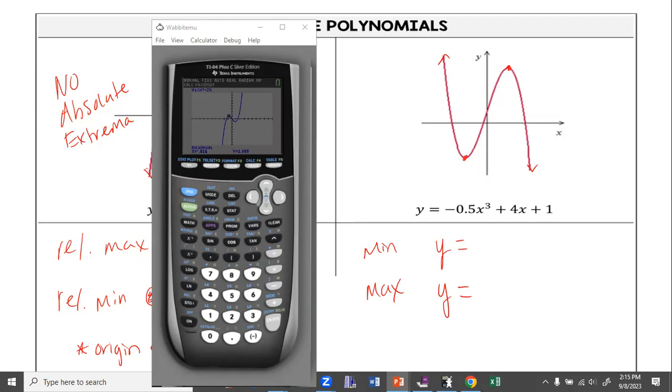Did you put the negative 0.5x cubed? Plus 4x plus 1? All right. Let's see where we're at.